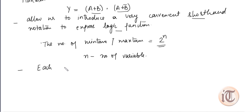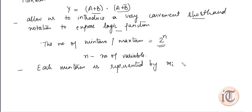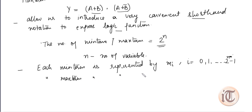Each min term is represented by small m(i), where i goes from 0, 1, up to 2^n − 1. Similarly, each max term is represented by capital M(i), where i also ranges from 0 to 2^n − 1.